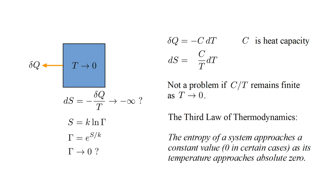Let's now give one statement of the third law of thermodynamics. The entropy of a system approaches a constant value, which is zero in certain cases, as its temperature approaches absolute zero. From our present discussion, we see that a corollary of this is that the heat capacity of any system must approach zero as the temperature goes to zero. There is an intimate connection between heat capacity and the third law.